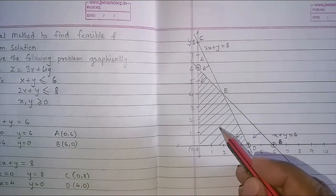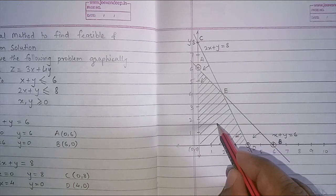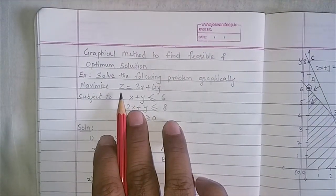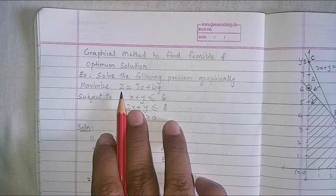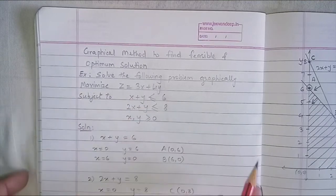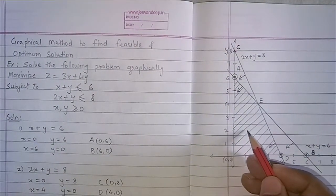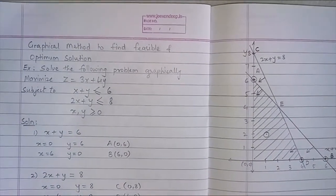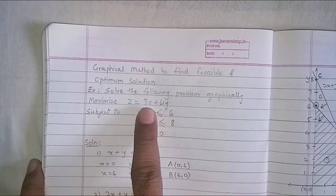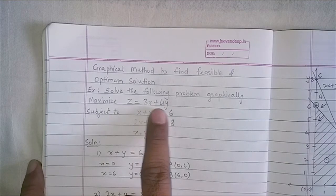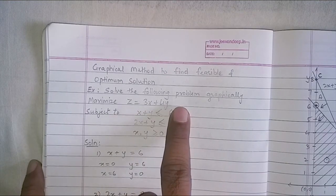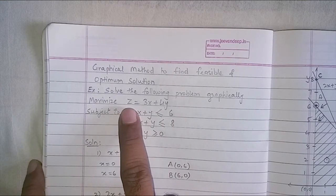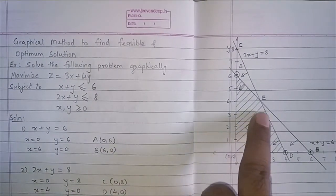That means, even if I draw a simple point in this area, it will give me the right answer for Z. But remember, it won't be the optimum solution. So, if I take a point, let us say I take a point 1 and 2, somewhere here, 1 and 2, it is lying inside the feasible area. Represent X as 1 and Y as 2. What is the answer? 3 plus 8. So, the answer will be 11. That will be the maximum value for Z. No, it is not the maximum value because I have taken a point which is inside the feasible area.